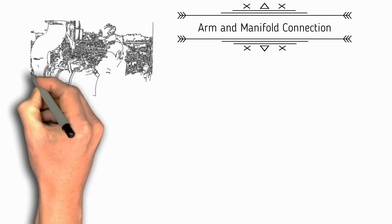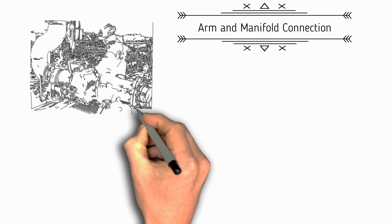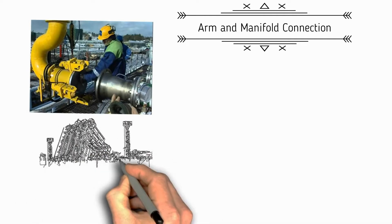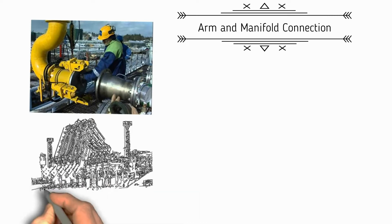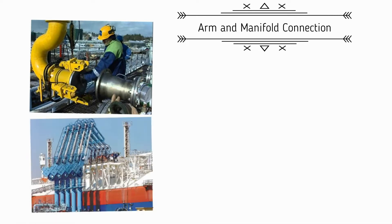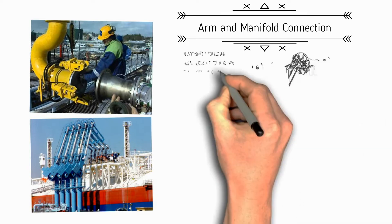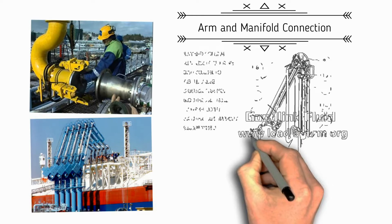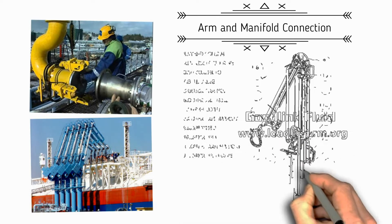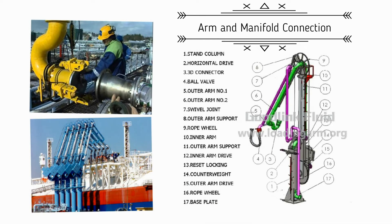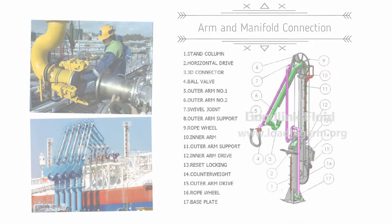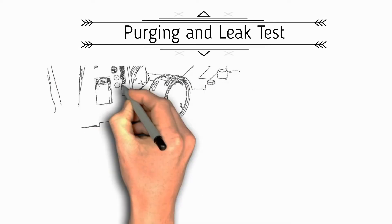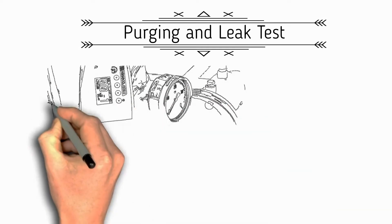Next is arm connection. The shore manifold arm is connected to the ship's manifold. Marine loading arms are used to load or unload vessels carrying petroleum products, chemicals, etc. They are made up of several sections of pipe with quick-connect fittings connected by swivel joints. The section on the shore side of the apex is the inboard arm, and the section on the tanker side is the outboard section.